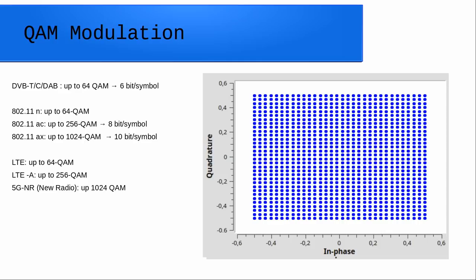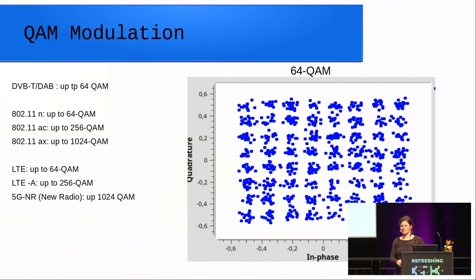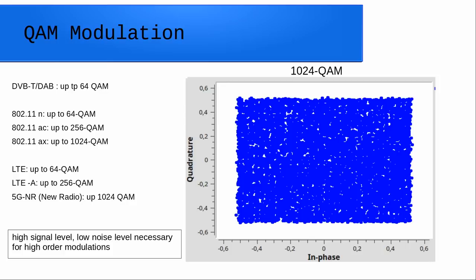802.11ac uses up to 1024-QAM with 10 bits per symbol, and so does 5G New Radio — 5G also uses up to 1024-QAM. This becomes interesting when we add noise. You always have noise in the channel. With 64-QAM and some noise you could still estimate where the original symbol would be, but this becomes much more difficult with 1024-QAM. That's why broadband systems always use adaptive modulation: they communicate about the signal quality and only choose the highest-order modulation if they get a really good signal level at the receiver.